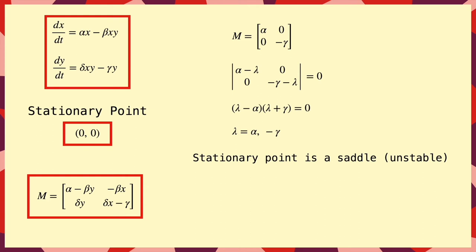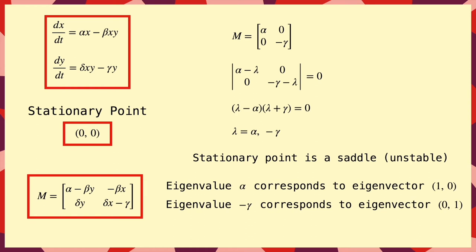Now, a saddle is unstable, but we can also find the eigenvectors to help us see what's going on. And the positive eigenvalue, alpha, corresponds to the eigenvector in the x-direction, so this means a population of only prey grows exponentially.